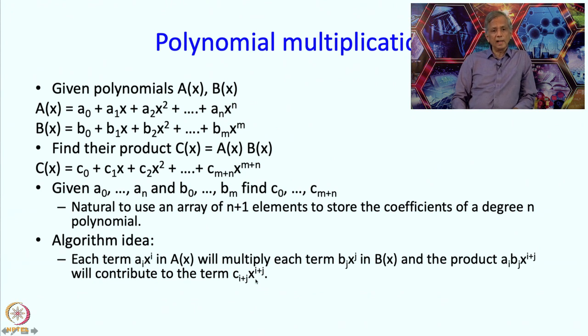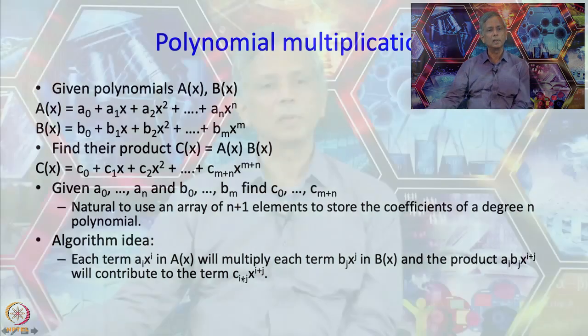So basically the idea is that we form every such possible product and then we look at, well if this was the coefficient of x to the i and if this was the coefficient of x to the j then the product that we calculate should contribute to the coefficient of i plus j. So in fact we should add the product into the current value of C i plus j. So that is exactly what our algorithm is going to be.